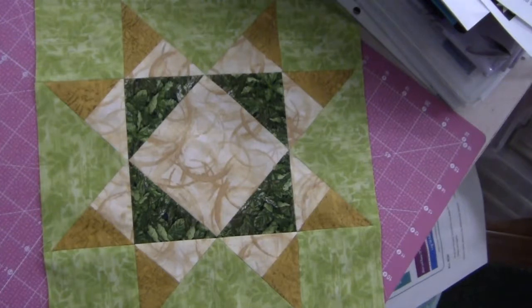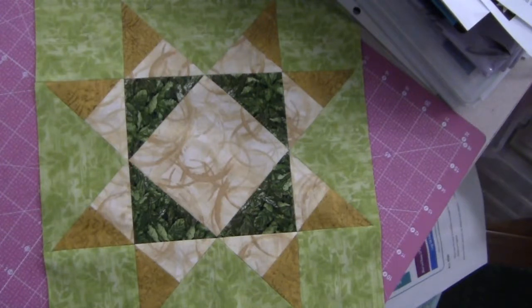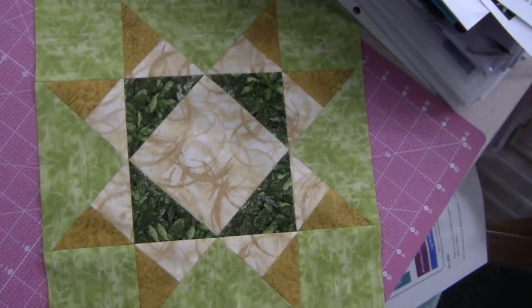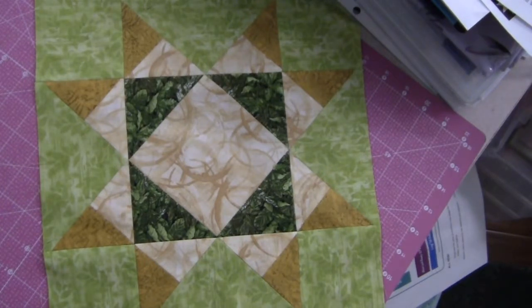And there you have it: Missouri Star block 8 of Cheshire Quilters Guild 2018 block of the month. This is the first block for May, so look for the other video for block 9 Aurora Star. I'll see you next time, bye bye.